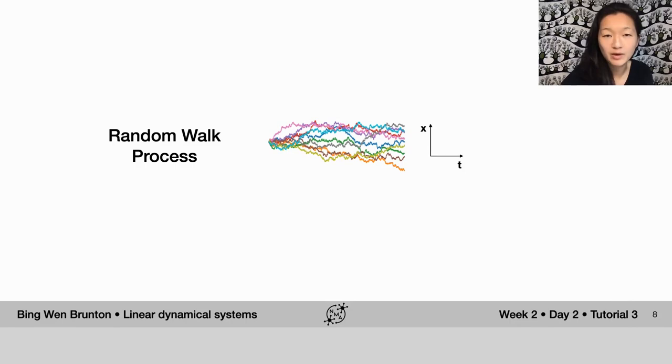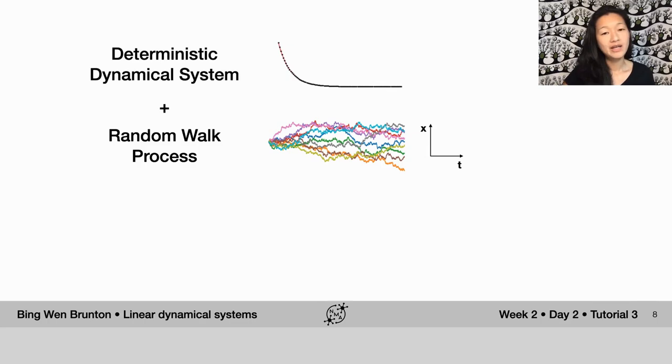So in the previous part of this tutorial, you explored random walk processes, and in particular, what you should have seen is that the variance of this distribution of solutions increases as a function of time in a way that is proportional to the variance of the underlying steps that you're taking.